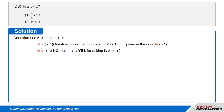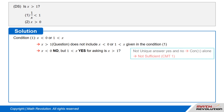Condition 1 gives x is smaller than 0, or x is greater than 1. The range x is greater than 1 that we are trying to find does not include all of the range given in condition 1. If x is smaller than 0, the answer to whether x is greater than 1 is no; but if x is greater than 1, the answer is yes. So we have both a no and a yes, meaning the condition is not sufficient by CMT1, which states that the answer must be a unique yes or no.